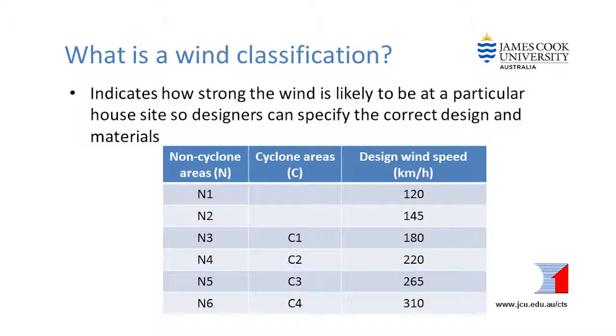C1 to C4 applies to sites in cyclone prone areas and N1 to N6 for the rest of Australia. Each classification corresponds to a design wind speed. In a wind event, because of the differences in exposure, some houses will experience lower wind speeds than those reported by the Bureau of Meteorology, while others will experience higher winds.